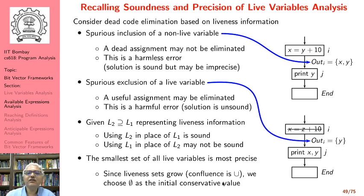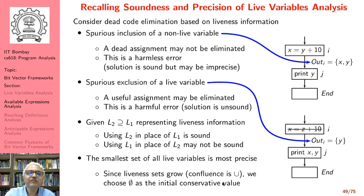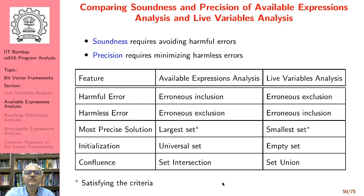Recall the similar arguments made for live variables analysis. There, a spurious inclusion was harmless. A spurious exclusion of a live variable was harmful and unsound, and using a superset was fine. Using a subset may or may not have been sound, and we use union so the liveness sets grow. We chose empty set as the initial conservative value, which allowed us to compute the smallest set of variables that satisfy the liveness criterion.